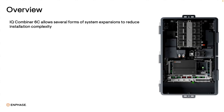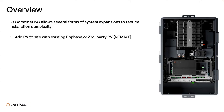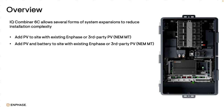The IQ Combiner 6C is designed to simplify system expansions and reduce installation complexity. Whether you're adding more PV, batteries, or both, this solution makes it easier. You can add PV or PV and batteries to a site with existing Enphase or third-party PV, and configure it as NEM multi-tariff.